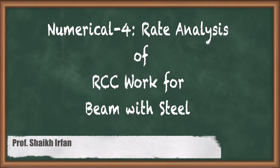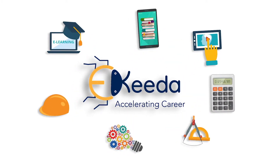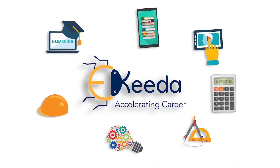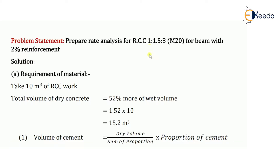Hello everyone. In this video we are going to see a numerical on rate analysis for RCC work. The grade of RCC or concrete is M20, so the proportion is 1:1.5:3. The problem statement says: prepare rate analysis for RCC 1:1.5:3, that is M20, for beam with 2 percent reinforcement.